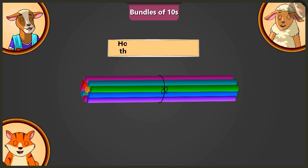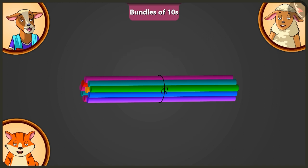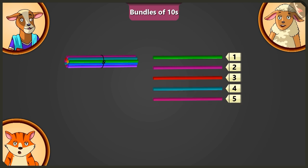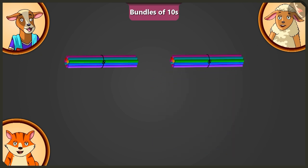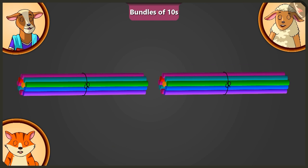Pilly, how many straws are there in this bundle? There are 10 straws in this bundle. Pilly, come on. Now, in the same way, make a second bundle of 10 straws. 1, 2, 3, 4, 5, 6, 7, 8, 9 and 10. Pilly, how many straws are there in total in both these bundles? In both these bundles, there are 10 and 10 — 20 straws in total.